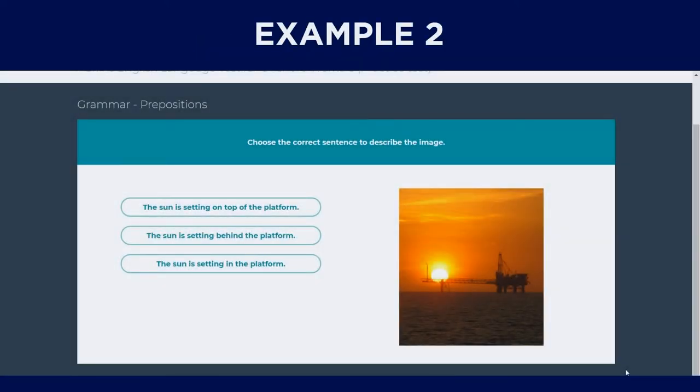In another example specific to the Marlinx test, although the sentence only states choose the correct sentence to describe the image, you will be able to know what it is asking for based on the options: the sun is setting on top of the platform, the sun is setting behind the platform, and so forth. In this case, it is asking for the position of the sun in relation to the platform.